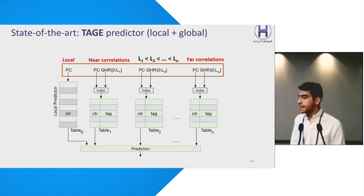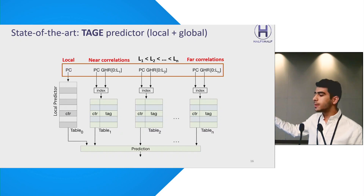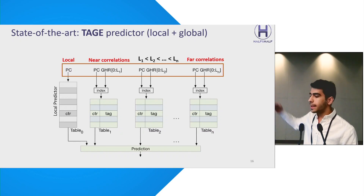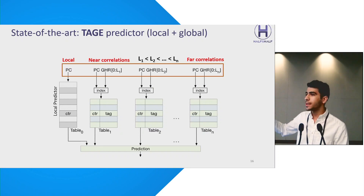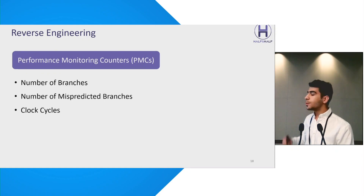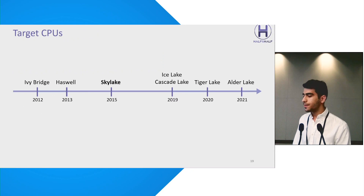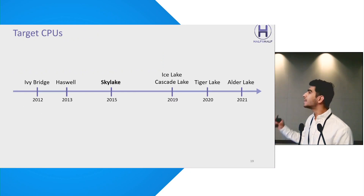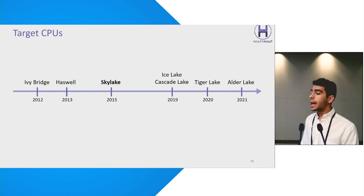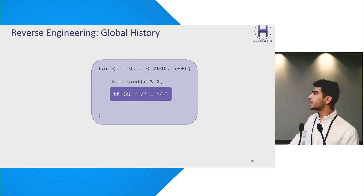Presented here is a simplified version of the state-of-the-art conditional branch predictor known as TAGE. TAGE employs a blend of local and global prediction tables, each utilizing an increasing length of global history. This design allows table 1 to capture near correlations, while table N captures far correlations. We assume that Intel's branch predictor has a TAGE-like structure using multiple tables, and we use performance monitoring counters provided by Intel processors — like number of branches, number of mispredictions, and clock cycles. Our target CPUs range from Ivy Bridge to recent microarchitectures like Alder Lake. For the rest of this talk, I'll present results specifically for the Skylake microarchitecture.